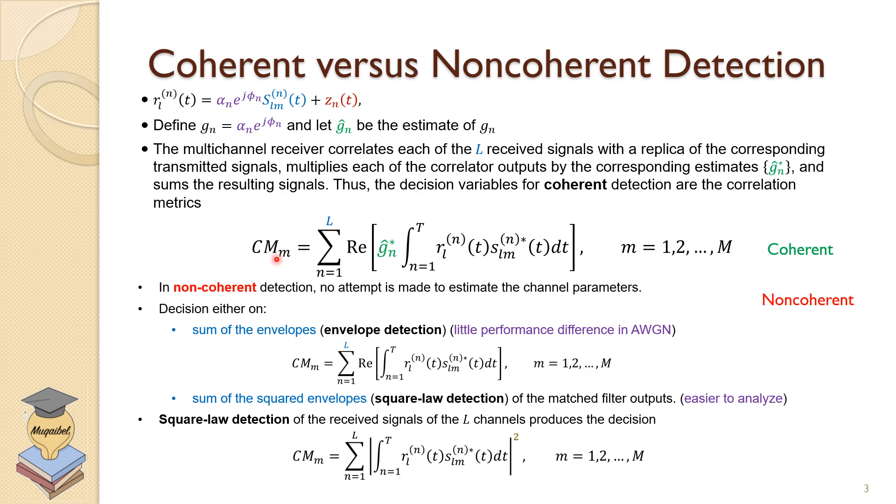So we are summing over all L channels. And this metric will be compared, will try to correlate with symbol 1, symbol 2, symbol 3, to find out which one of the symbols was transmitted. And this is why we have subscript M. So this CM is our metric. More about combining techniques can be found in my other slides.